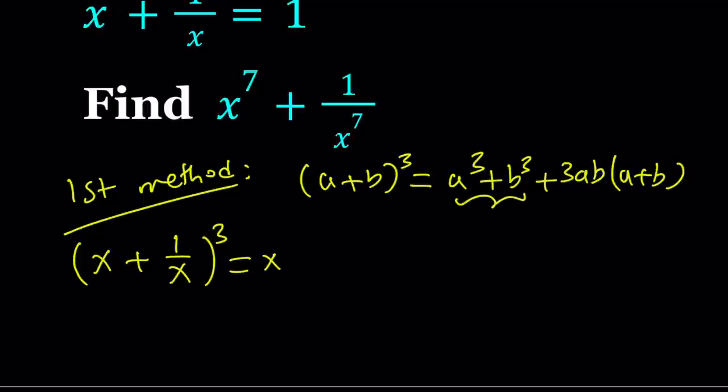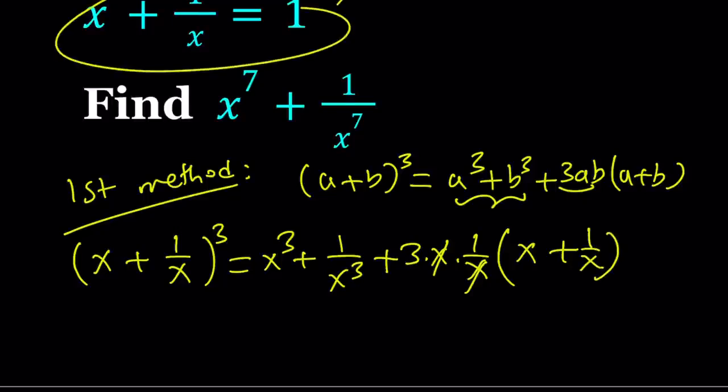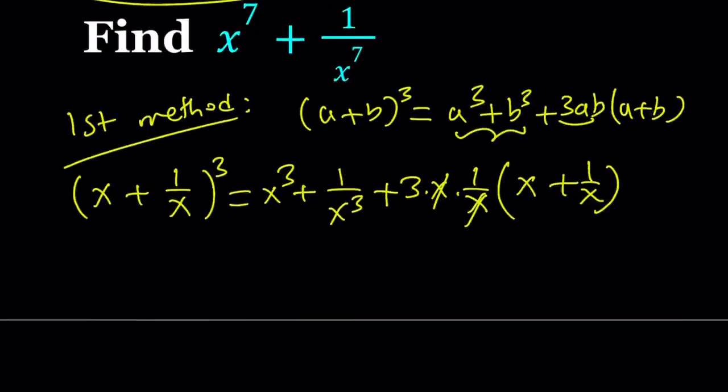So I'm going to start off with x cubed plus 1 over x cubed, plus—now 3AB—this is the beauty of it. 3 times x times 1 over x, they're going to cancel out. So we're going to get 3 from here, multiply by A plus B, which is x plus 1 over x. Now, I know that x plus 1 over x equals 1. Therefore, if I cube it, it's going to be 1 again.